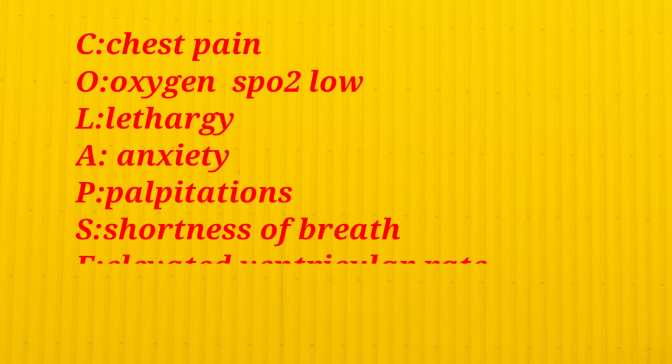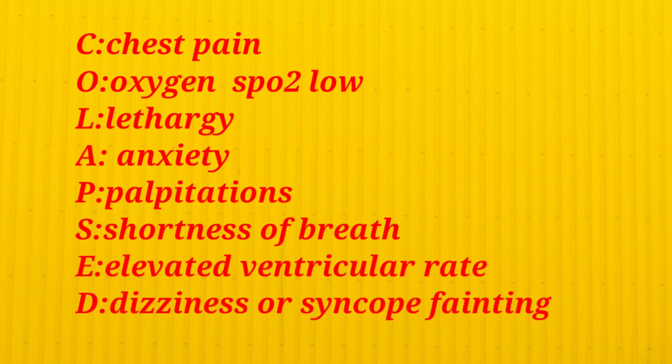How can we remember the signs and symptoms? Look at the patient — he's collapsed and rushed to the ICU. Remember the word COLLAPSED: C for chest pain, O for oxygen — that is low levels of SpO2, L for lethargy — that is muscle weakness, A for anxiety, P for palpitations, S for shortness of breath, E for elevated ventricular rate — the heart rate is higher, and D for dizziness or syncope. Remember this word COLLAPSED — it's very easy to recall the signs and symptoms of VTAC.